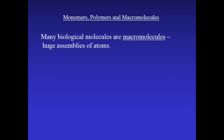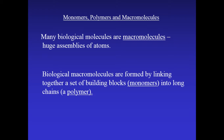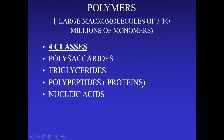These large macromolecules are huge assemblies of atoms formed by linking together simple building-block molecules called monomers — 'mono' meaning one. When we build a large macromolecule, it's called a polymer because it's made of many monomers. These large macromolecules can contain three to millions of monomers linked together through chemical bonding. For example, a carbohydrate is sometimes called a polysaccharide — 'poly' meaning many — and a monosaccharide is the monomer of a carbohydrate.